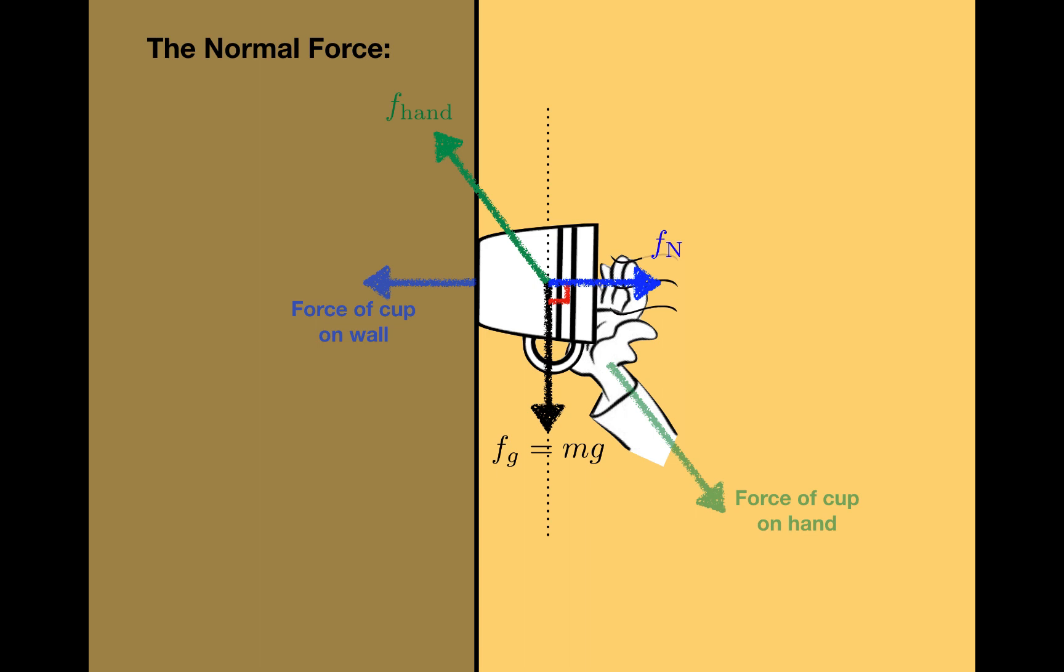Finally, mg, the gravitational force, is the force that the Earth exerts on the cup, and the reaction to that force would be the force that the cup exerts on the Earth. When you start drawing these forces, particularly when there are lots of forces involved, the picture can get to be kind of a mess, and it can be confusing if you're not careful.